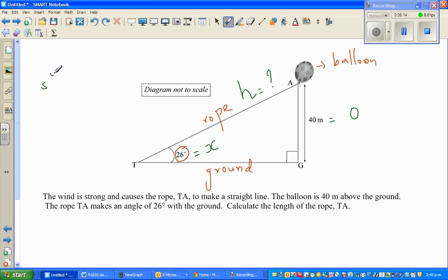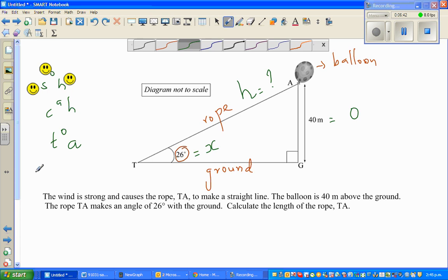So again, decide which trig ratio will you use. You've got SOH, CAH, and TOA. So here you're dealing with O and H. You're finding O and H. So again, you're not dealing with your adjacent. With respect to this angle, this is your opposite and this is your hypotenuse. So again, SOH is smiling very strongly at me, so I'll write the SOH formula.